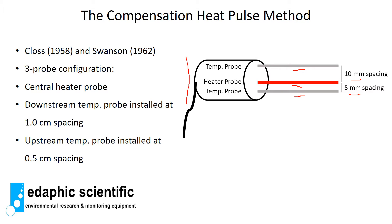You don't strictly have to use these exact spacings, but what is important with the compensation heat pulse method is that the spacings are not equal — the temperature probe distances must be unequal. The method was first proposed by Closs back in 1958 but was further developed by Swanson in 1962 and subsequent publications. It is one of the most widely used heat pulse velocity methods.